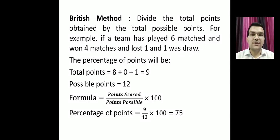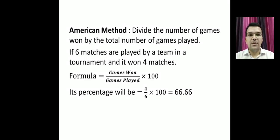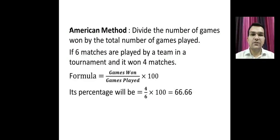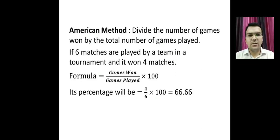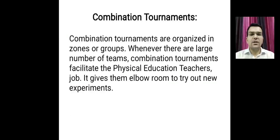We divide nine by twelve and multiply by 100 to get a percentage — giving 75% points. In the American method, we divide the number of matches won by the number of matches played and multiply by 100 to calculate the point percentage. These two methods are used at the end of the tournament to calculate each team's points.